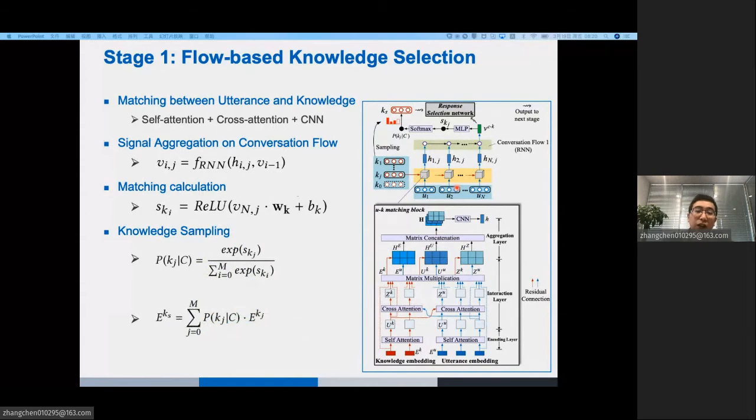Specifically, the network contains four steps. First, we use self-attention, cross-attention, and CNN to perform matching between each utterance and knowledge in this UK matching block. Then, we aggregate the matching signals by an RNN network, and we get VCK. Next, we calculate the matching score SK by using an MLP layer. Lastly, we sample the knowledge by using a softmax layer.